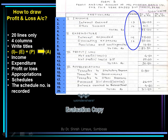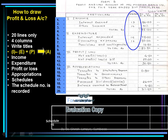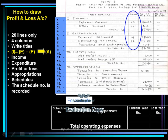Each item shown under capital and liabilities and assets is supported by schedules. Each of these schedules is written in the working notes. Relevant items are recorded in the schedules first, then the total of the schedule is taken and written in front of the respective schedule. After viewing the next slide you will remember the sequence and titles of each of these schedules.